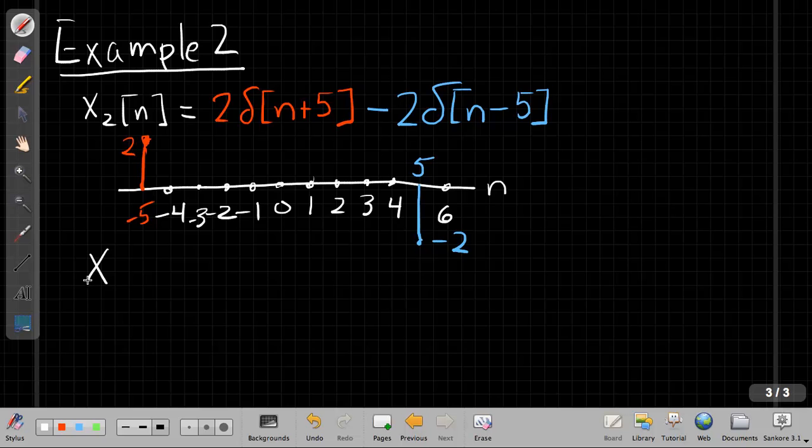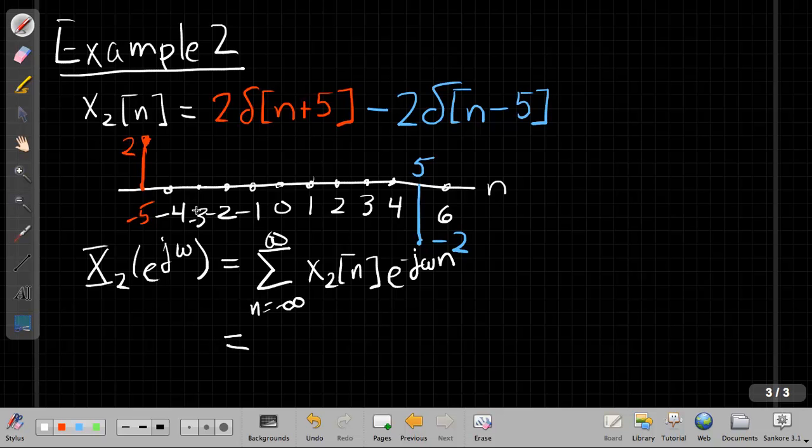So this should be a Fourier transform that's imaginary and an odd symmetry. Let's see how that works out from the sum. So now if I want to find the Fourier transform, I start with the same sum: X₂(e^jω) equals the sum as n goes from minus infinity to plus infinity of x₂[n]e^(-jωn). And again, all the terms in this sum are going to be 0 except just these two values. When n equals minus 5, keeping my color-coded scheme going to help you see where each term comes from. So when n equals minus 5, I get 2e^(j5ω). And when n equals plus 5, I get a minus 2e^(-j5ω).